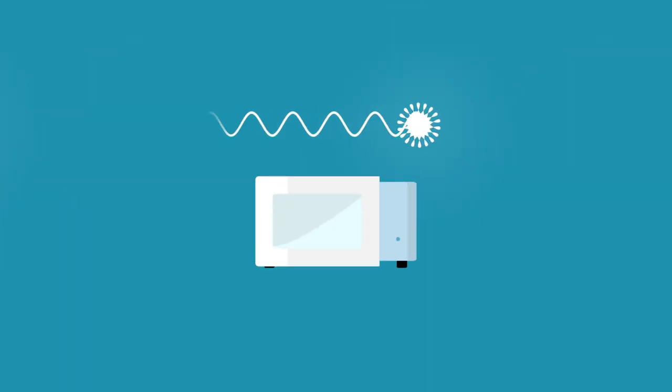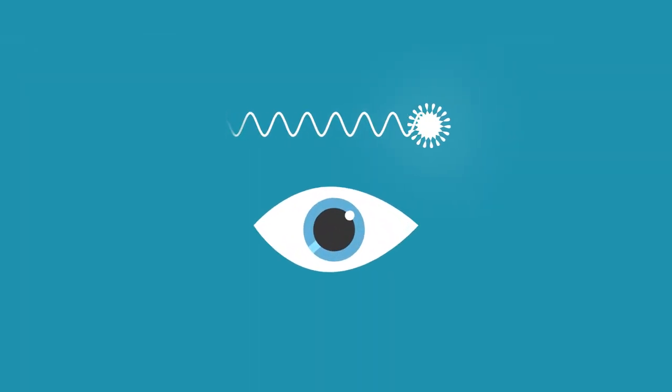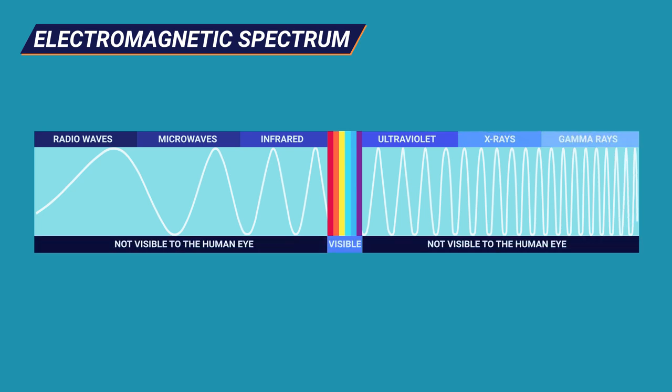Radio waves, microwaves, but also the light visible to the human eye - that's all electromagnetic radiation which can be categorized in the electromagnetic spectrum.